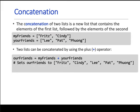Then concatenation. Concatenation of two lists is the new list that contains elements of the first list followed by the second. If you have my friends and your friends, you say concatenate them or add them, it will be Fritz, Cindy followed by Lee, Pat, and Fong.